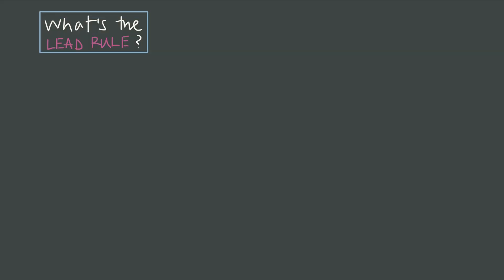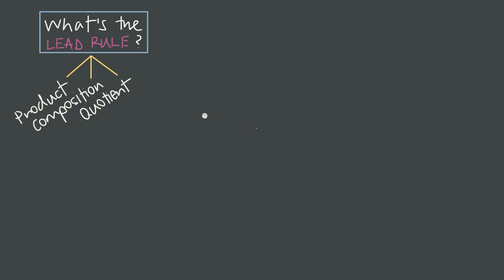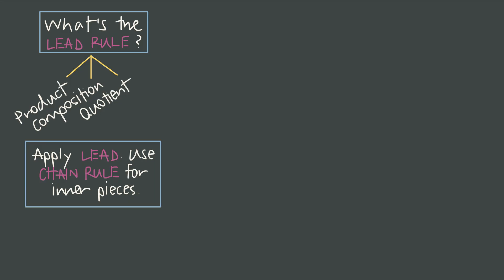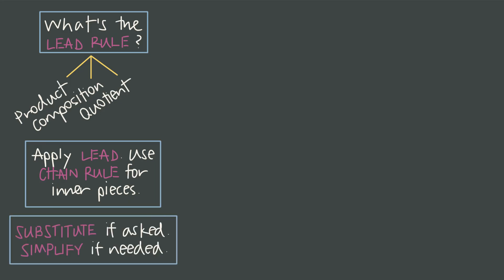Now we need to talk about mixed rules, because this comes up a lot. Whenever we're trying to take a derivative, we always need to think about what our lead rule is. That lead rule could be the product rule, the quotient rule, or just the chain rule if we have a composition of functions. From there, we apply the lead rule using chain rule for the inner pieces where needed. And finally, substitute if asked to, and simplify if needed.